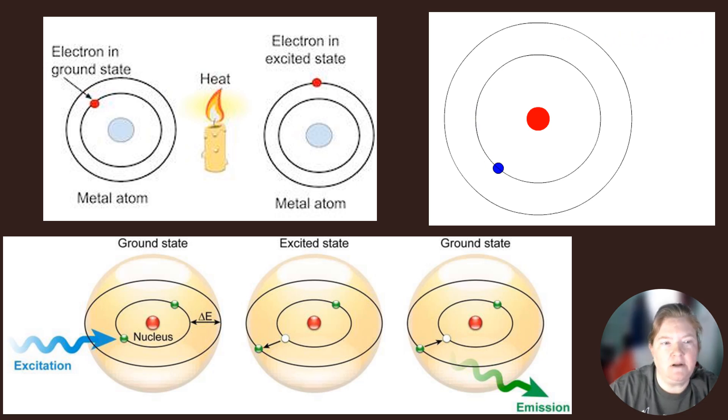We have metal atoms that have their electrons in the ground state, meaning the lowest possible energy levels, and we can look those up on the periodic table. Then we apply heat. So in this case, from a Bunsen burner flame, those electrons get excited and they jump up to a higher energy level. Why? Because we gave them energy.